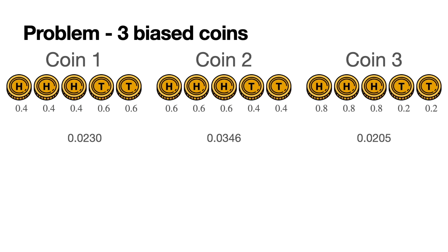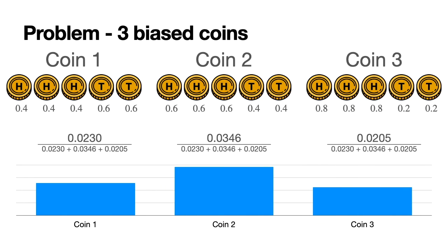But here is where Bayes' theorem comes into play. Since we have three events, which are picking coin one, picking coin two, or picking coin three, and they are the only three things that happen, then the sum of the probabilities of these three events needs to be 1. And they need to be proportional to the probabilities we obtain. So the only way to get three numbers to add to one is to divide the three of them by the sum. So we divide the three of them by 0.0230 plus 0.0346 plus 0.0205. And we get these three numbers, which we're going to plot over here, 0.295, 0.443, and 0.262. So those are the three probabilities that we get coin one, coin two, and coin three.